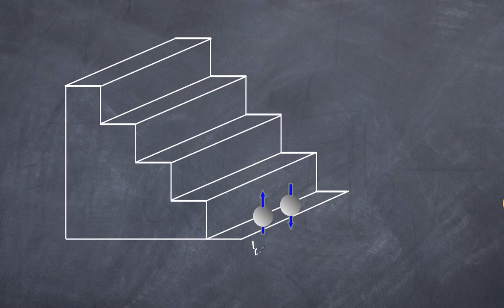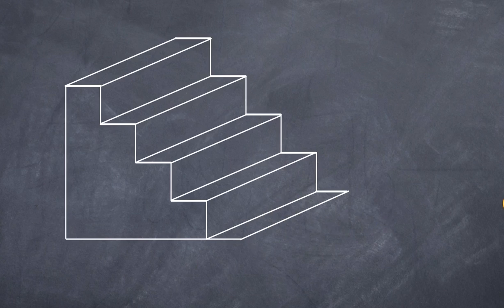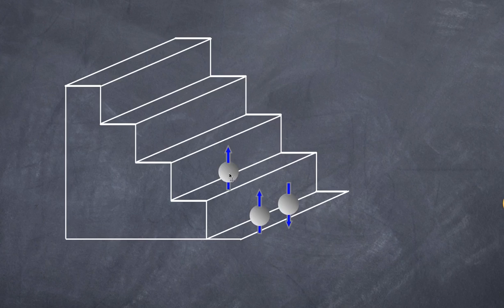Their spins cancel out: +1/2 and -1/2 give a net spin of zero. If I add a third proton — making lithium, ignoring neutrons — it can't exist on the first energy level, so it goes to the next. These first two cancel out, and the third proton on energy level two contributes a spin of +1/2. So the net spin is one-half.